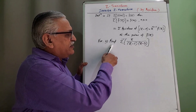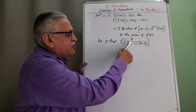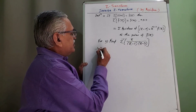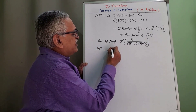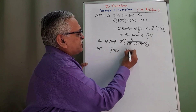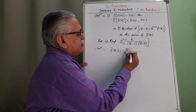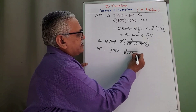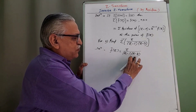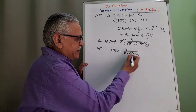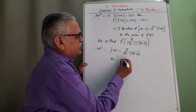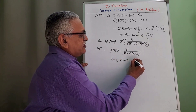One more problem. Second example: find the inverse Z transform of Z/((Z − 1)(Z − 3)). Let F̄(Z) = Z/((Z − 1)(Z − 3)) whose inverse Z transform is required. There are two factors in the denominator; equating each to zero we get Z = 1 and Z = 3 as two simple poles.